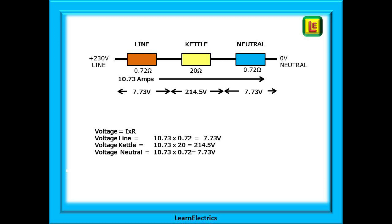Calculating individual voltage drops: 10.73 amps times 0.72 ohms gives 7.73 volts drop for each of the line and neutral cables. This means only 214.5 volts is available for the kettle. The total voltage lost in line and neutral is 15.5 volts — well above the permitted limit for non-lighting circuits of 11.5 volts. We're already in trouble.